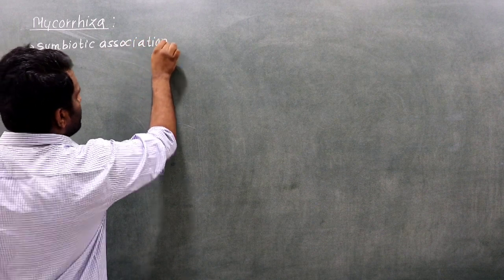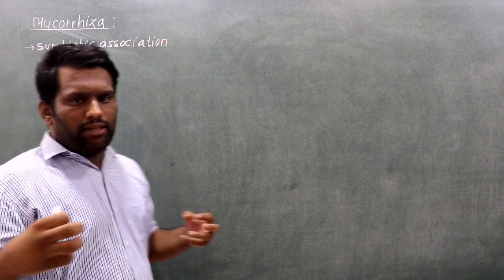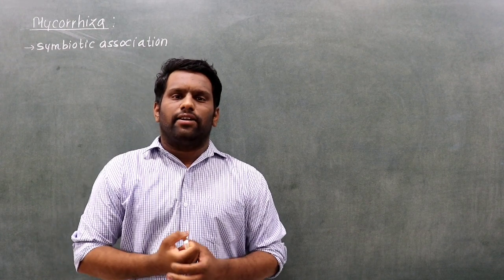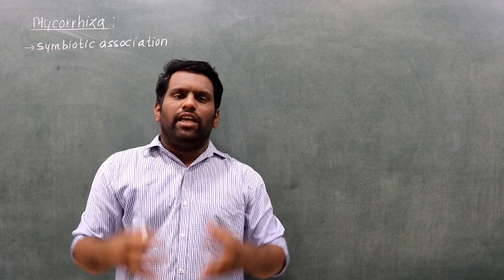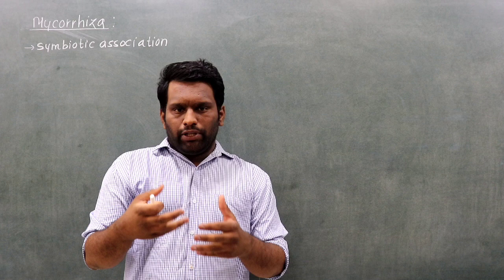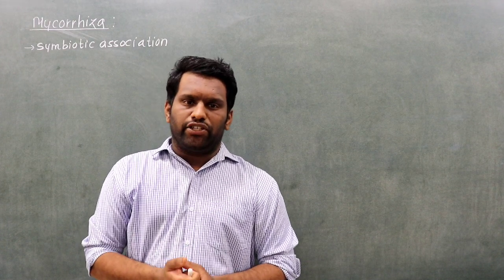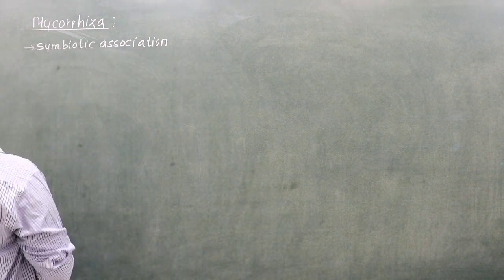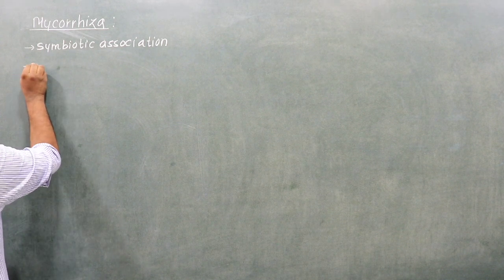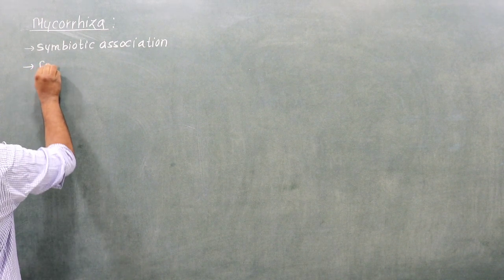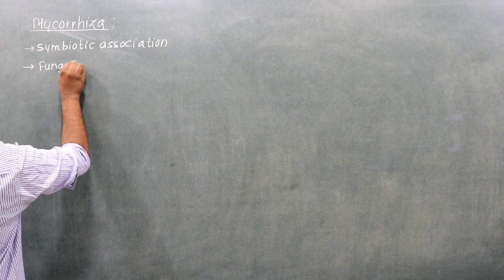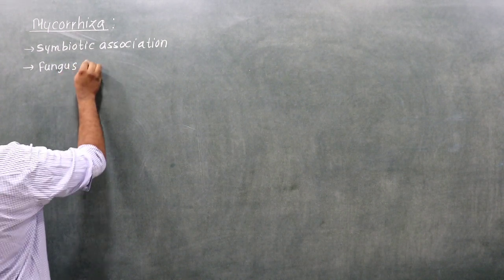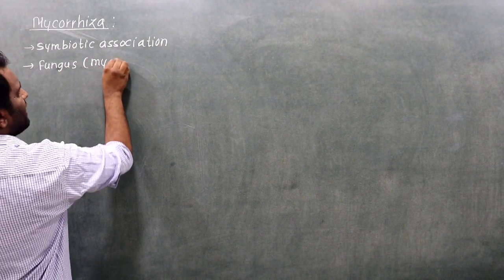What do we mean by symbiotic association? There are two organisms, let's consider them as A and B. These two are dependent on each other. This is mutualism. How do we have two organisms? We have fungus. What is the fungus? We have mycelium.